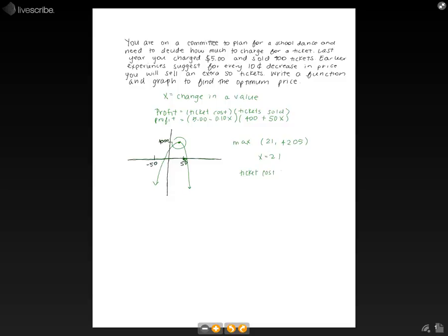we define that as 5 minus 0.10x. So to find our ticket cost in this case, we need to do 5 minus 0.10 times 21, which gives you $2.90 as the optimum ticket price.